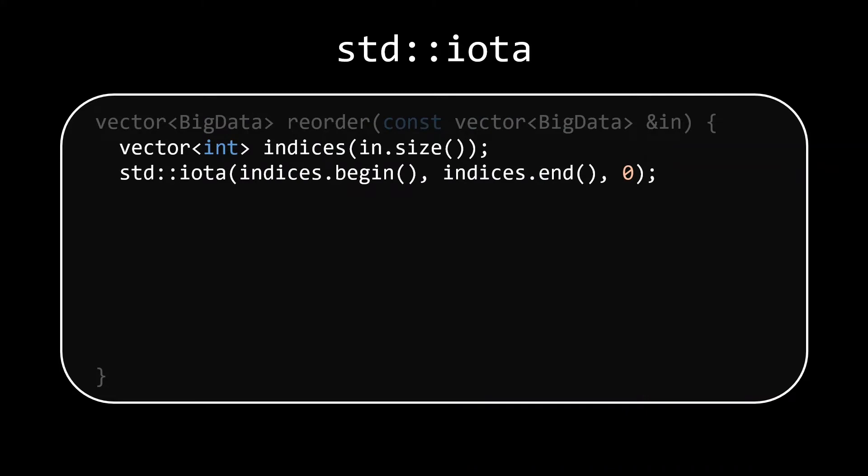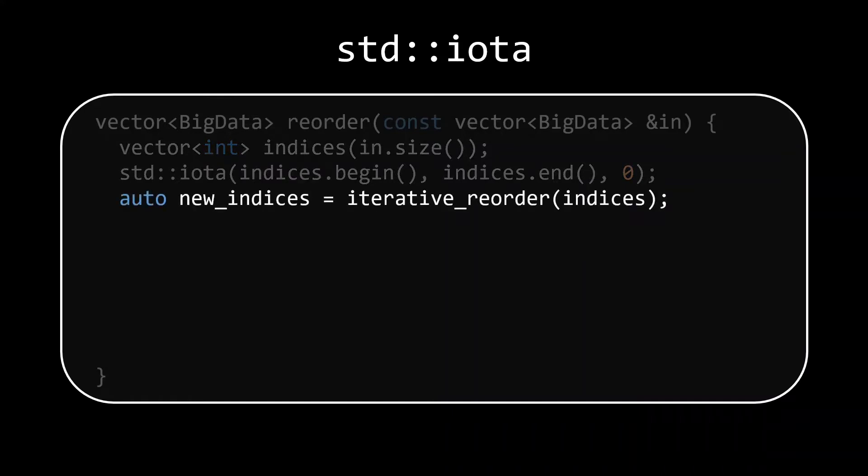Next, I'll do this iterative reordering on the indices, giving me a new container of indices specifying exactly how the big data needs to be moved around, even though the iterative reorder function never needed to process the big data.